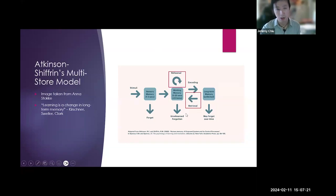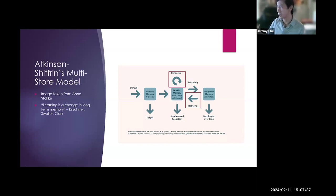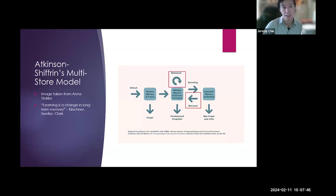Active learning focuses on two aspects: rehearsal and retrieval. According to Atkinson-Schiffrin, if you want to develop long-term memory, you need the retrieval process. A lot gets forgotten if you don't rehearse — your working memory only lasts about 20 seconds. The theory as to why active learning is good is because it forces rehearsal and retrieval. When students are engaged, they're more likely to change their long-term memory.